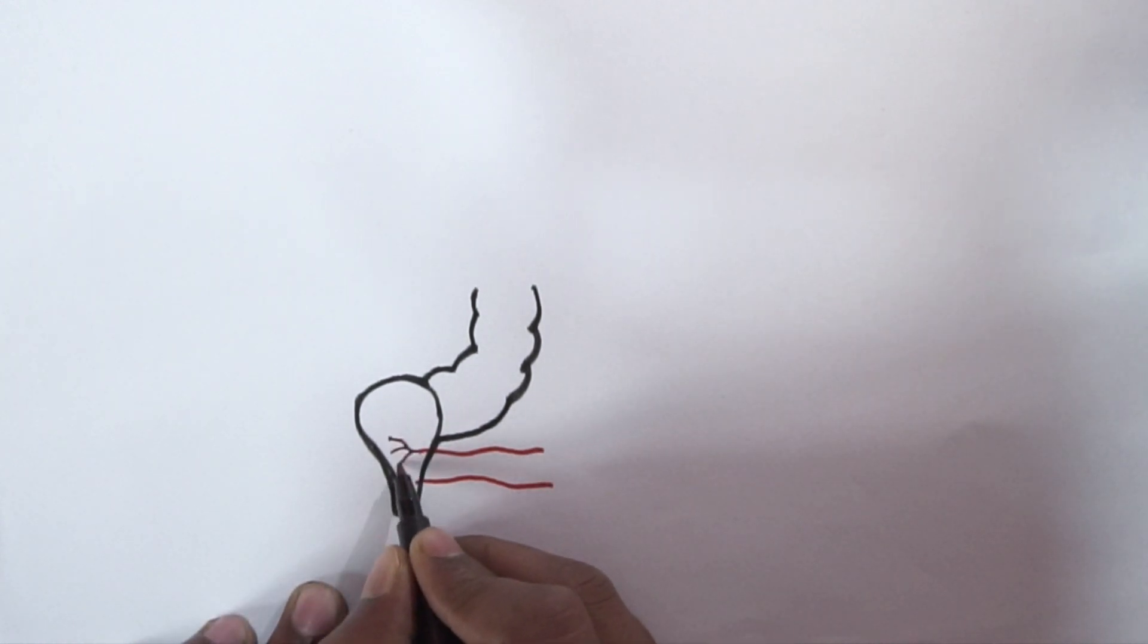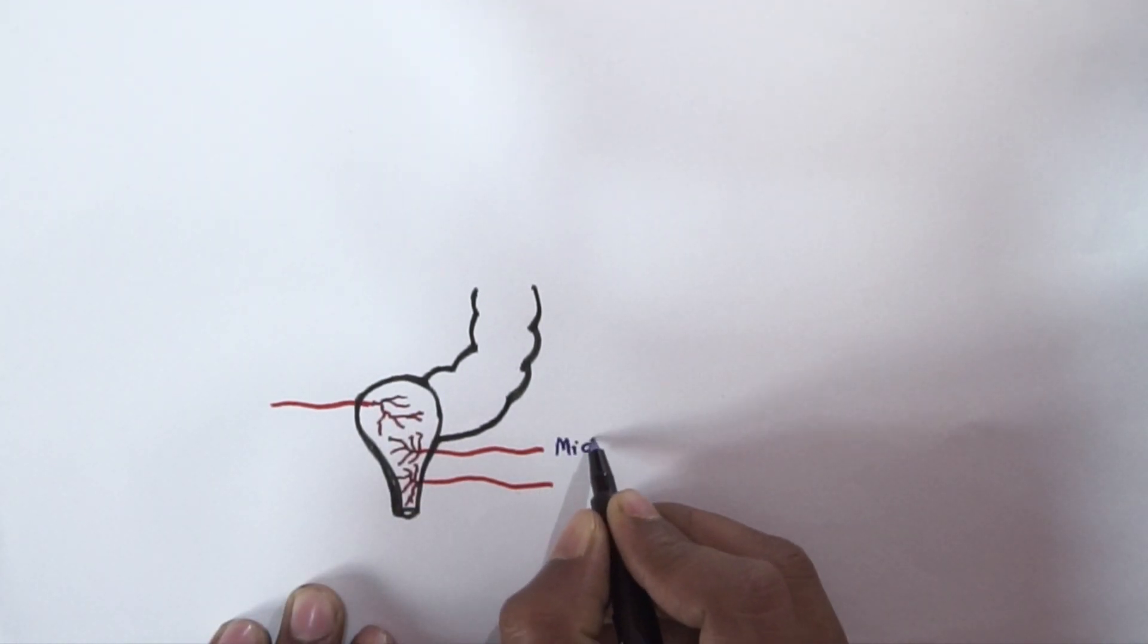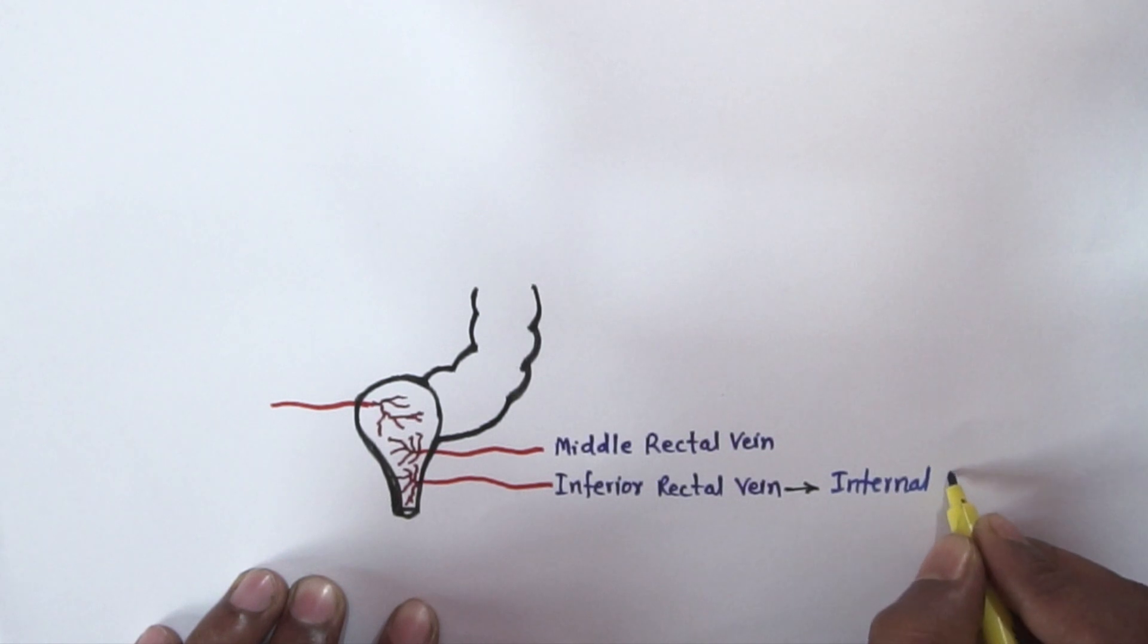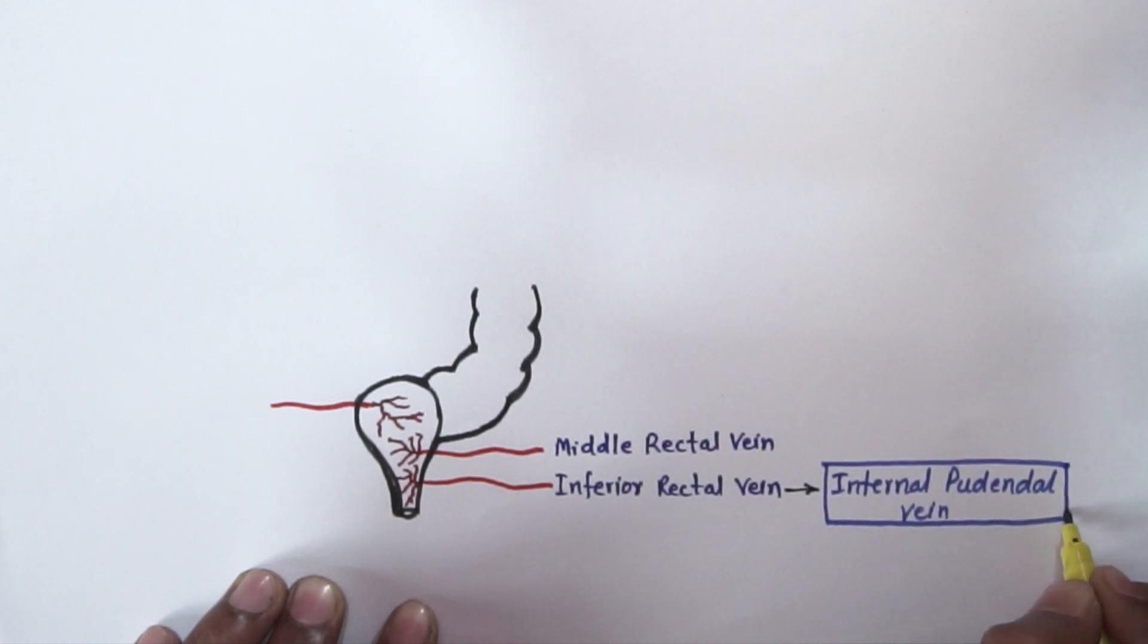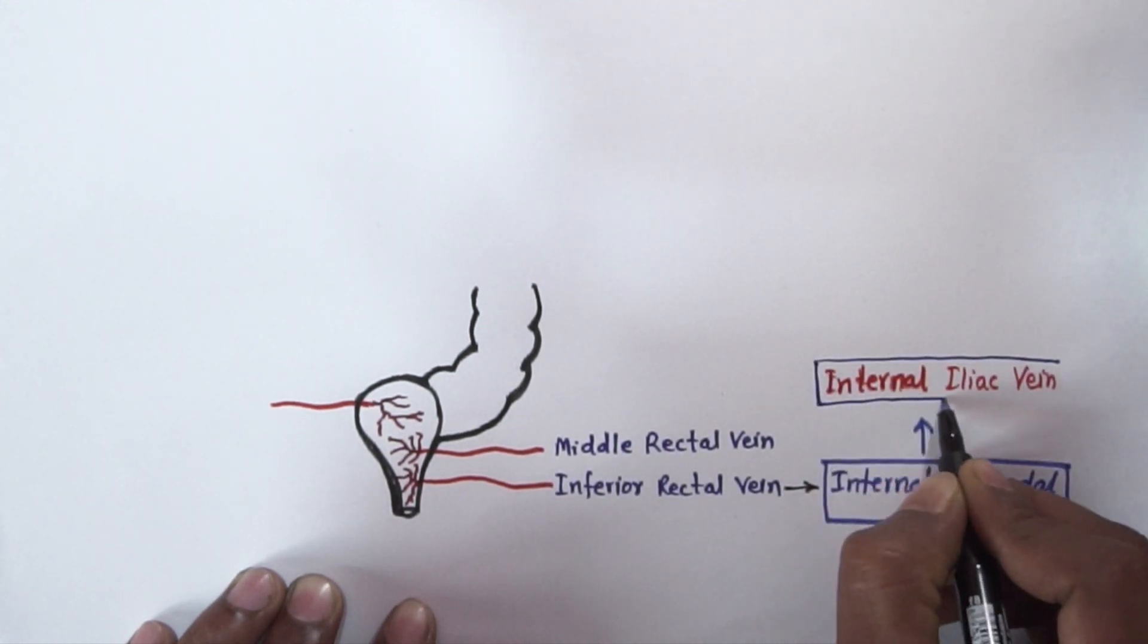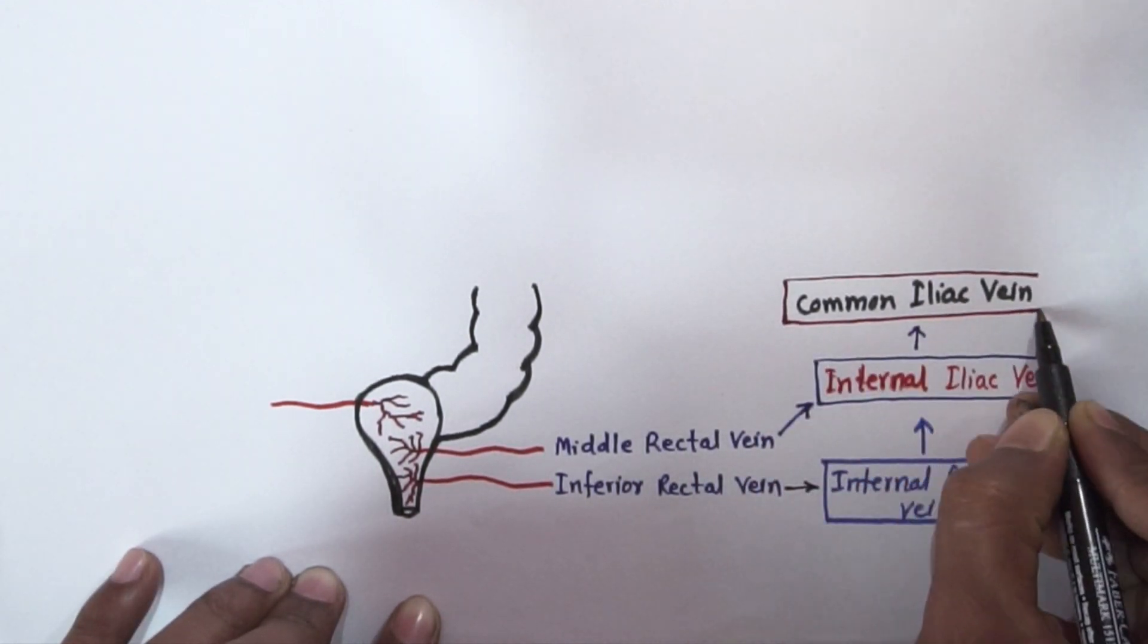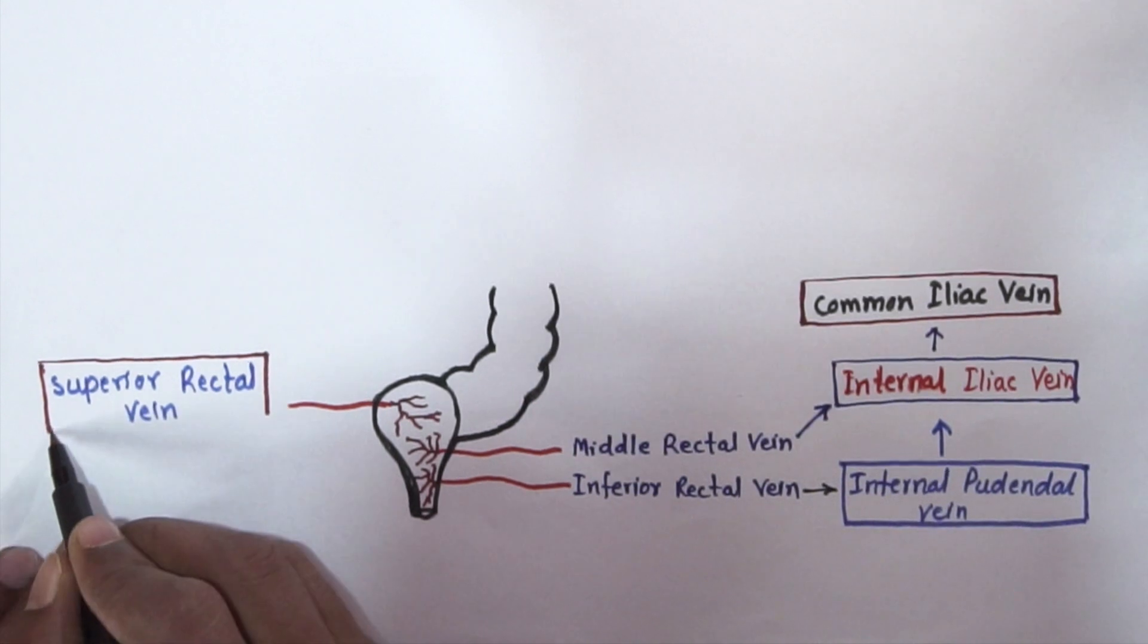Now we will discuss about the blood supply in rectum, and from here we will come to know why there is no first-pass metabolism or very less first-pass metabolism in rectal route. So this is middle rectal vein, this is inferior rectal vein, and they will collect blood from middle and inferior part of rectum respectively. Inferior rectal vein drains into internal pudendal vein, which in turn drains into internal iliac vein.